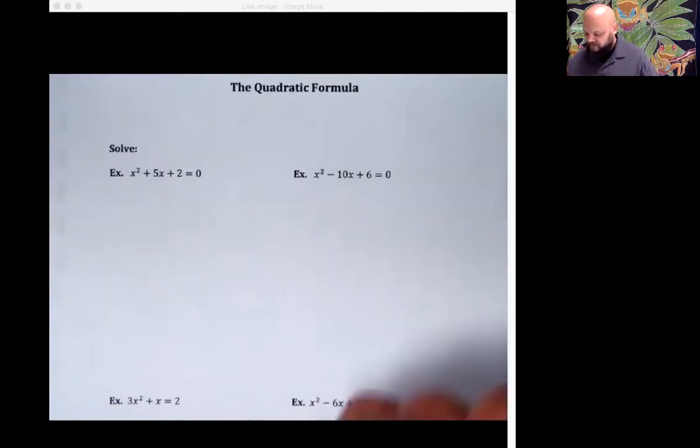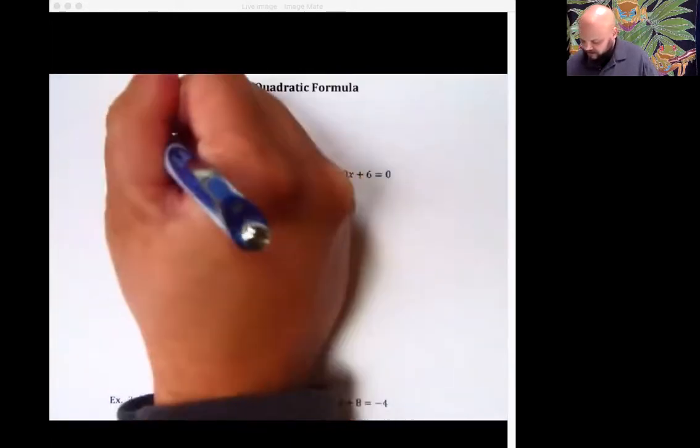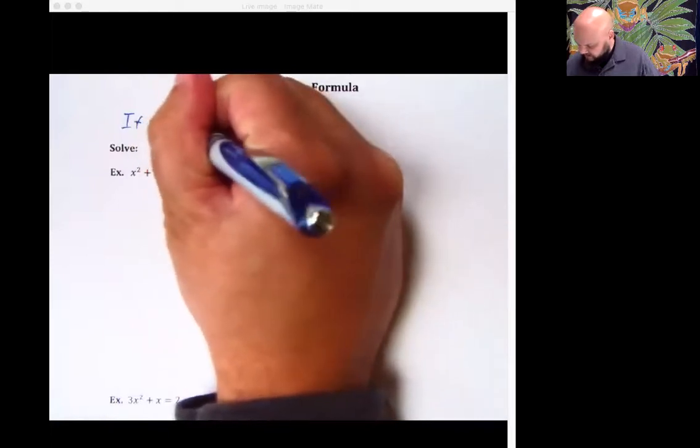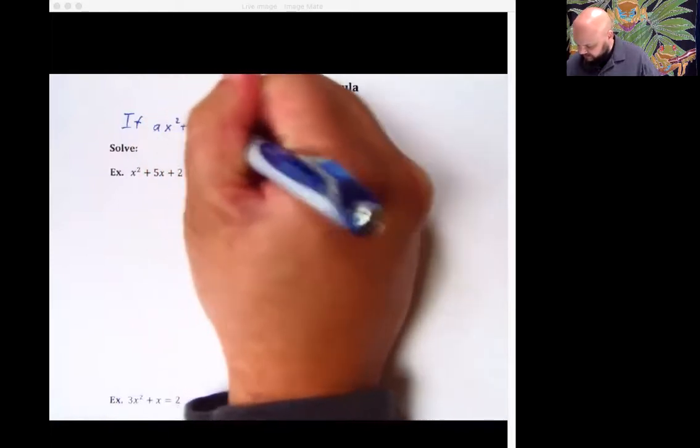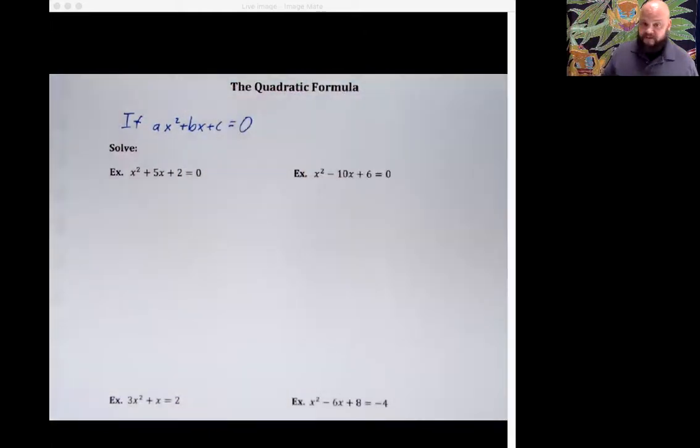What we need to start off with first is an if-then statement. If we have a quadratic equation in the standard form, so that's ax squared plus bx plus c is equal to zero. And it's gotta equal zero, folks.